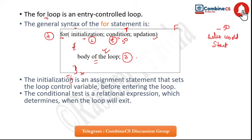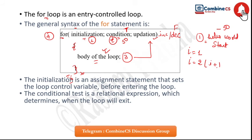After the body executes, the condition variable is updated — either incremented or decremented. For example, if i is 1, it increments to 2, that is i plus 1. Then the condition is checked again. This continues as steps 4, 5, 6, 7 — it keeps running continuously.